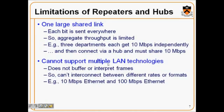Another limitation is that repeaters and hubs cannot support multiple LAN technologies. They just repeat the signal and don't buffer or interpret the frames coming in. Therefore, they can't interconnect between different rates and formats — if a different format is present, they cannot change it because they do nothing with the frame.